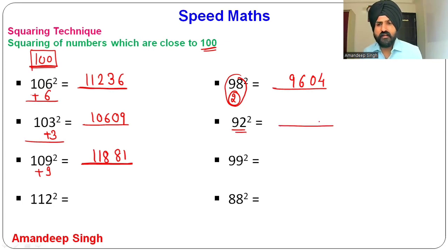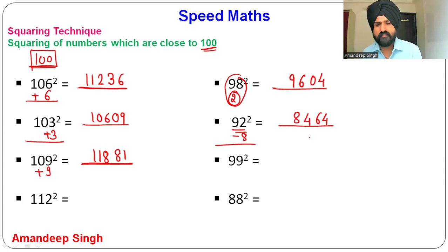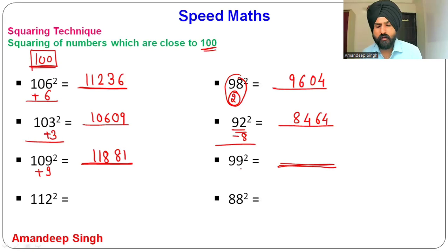For 92²: it is 8 less than 100. 8² = 64, write 64. 92 − 8 = 84. So 92² = 8464. For 99²: it is 1 less than 100. 1² = 01, write 01. 99 − 1 = 98. So 99² = 9801.